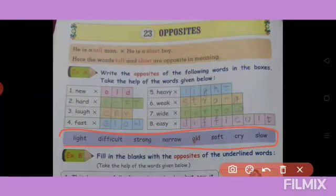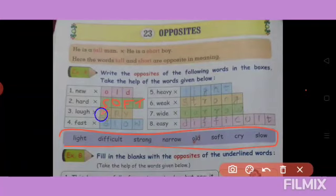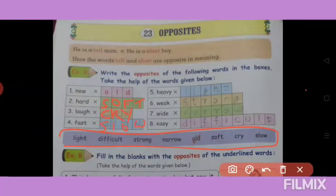Second: hard — hard ka opposite soft. S-O-F-T. Soft. Laugh — cry. Laugh matlab hasna, cry matlab rona. Fast — slow. S-L-O-W. Fast ka meaning to sab ko pata hai, jaldi; slow matlab dheere dheere. Heavy — light. Heavy matlab bhaari, light matlab halka.